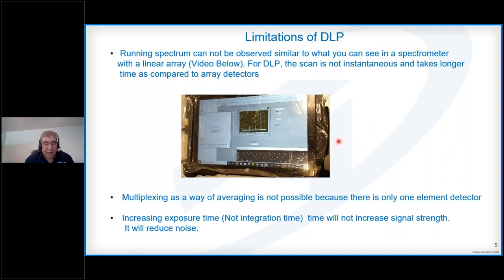The second limitation is that in the case of detector array, you can do multiplexing and boxcar averaging between different pixels, but in case of DLP you have only one single element detector, so you can't do boxcar or multiplexing. The other difference is for small signals, the array detectors can increase the integration time and amplify the small signal. But in case of DLP, there is no integration time, there is only exposure time. Increasing the exposure time does not increase the amplitude of the signal. It has more time to do averaging, which can help reduce the noise, but it doesn't amplify the signal. These are some of the limitations.